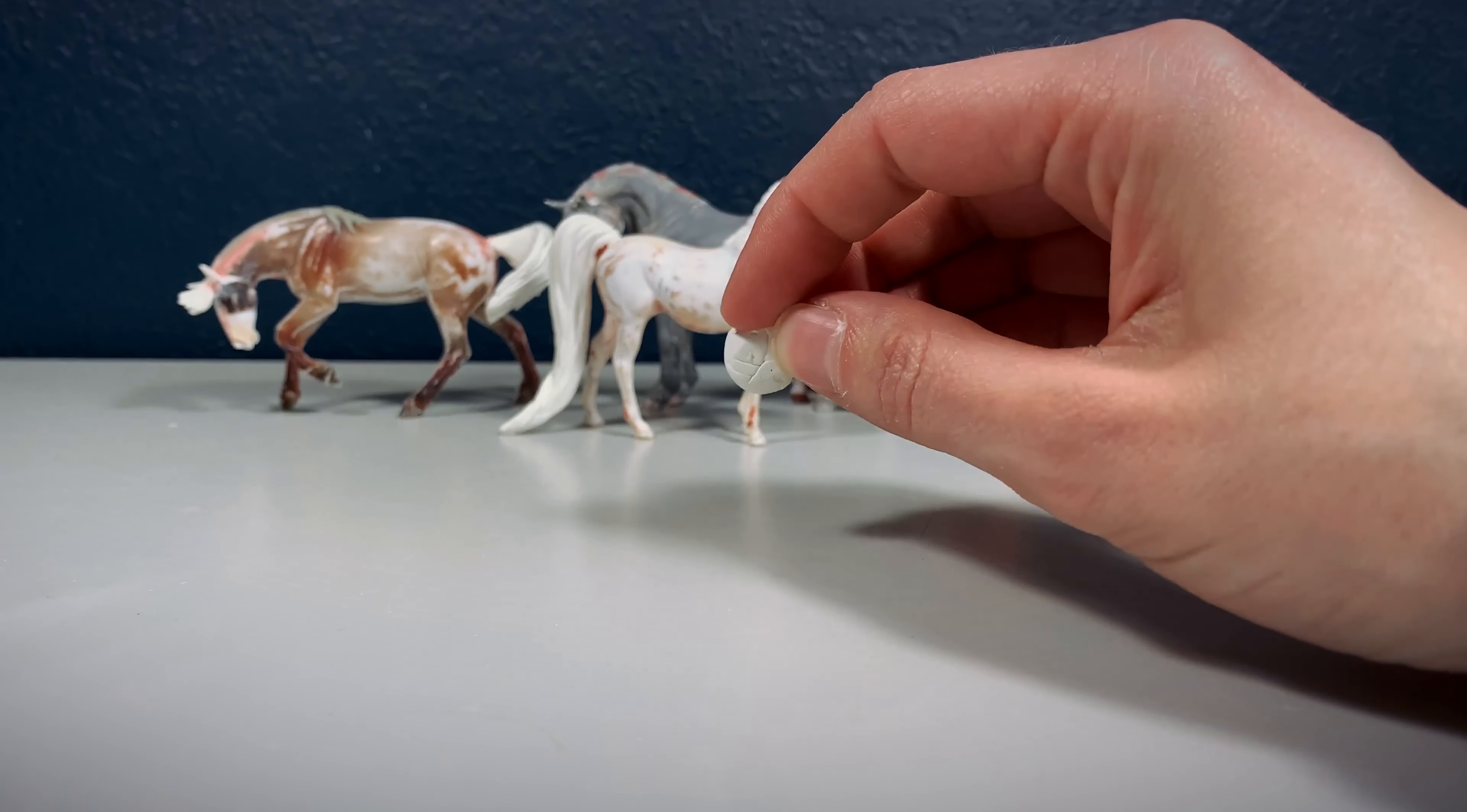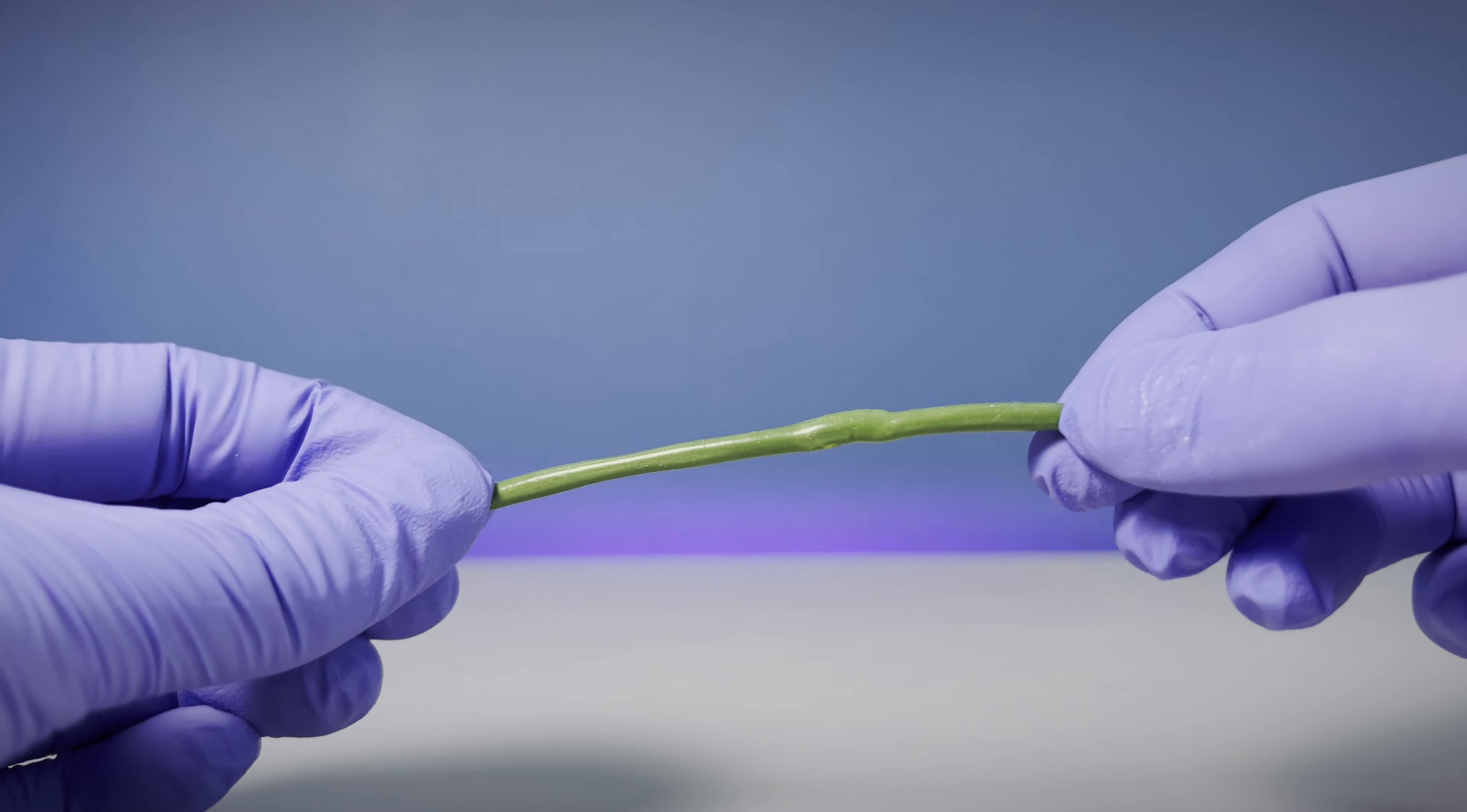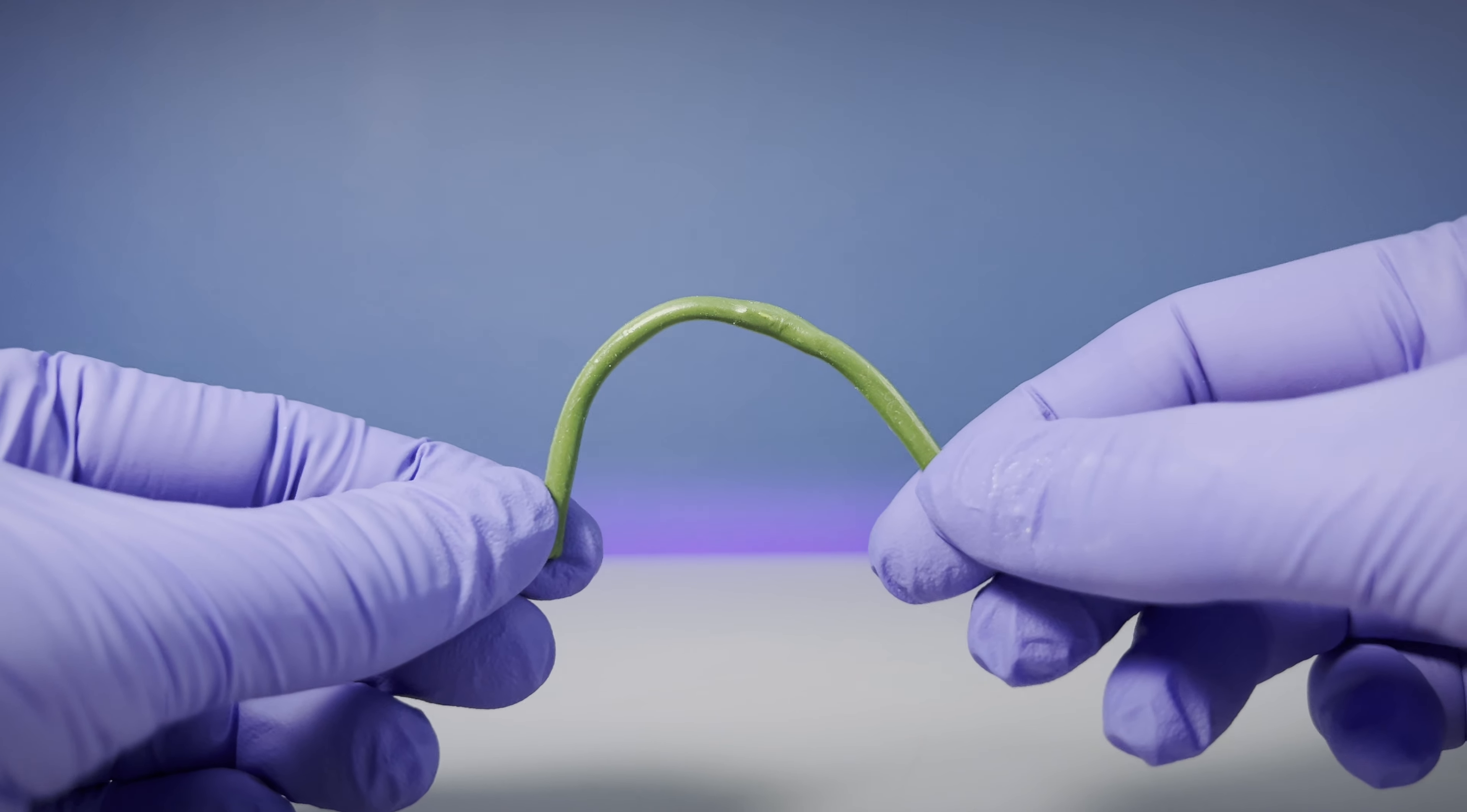Milliput, like Aves and Magisculpt, are rigid putties and Green Stuff is a flexible putty. When put under a lot of pressure, flexible putties tend to bend instead of snapping.